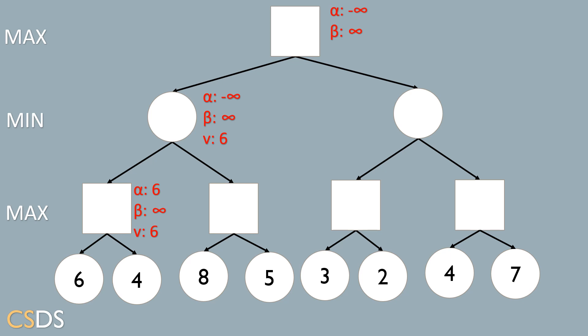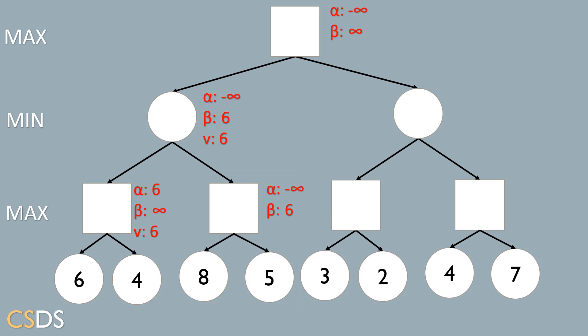We continue to the right subtree, passing alpha and beta values down to the child node. We look at the left child of the max node, which is eight, and update v to eight. Because we are at a max node, alpha is updated to the maximum of v and the current alpha, which is minus infinity, so alpha is now equal to eight.